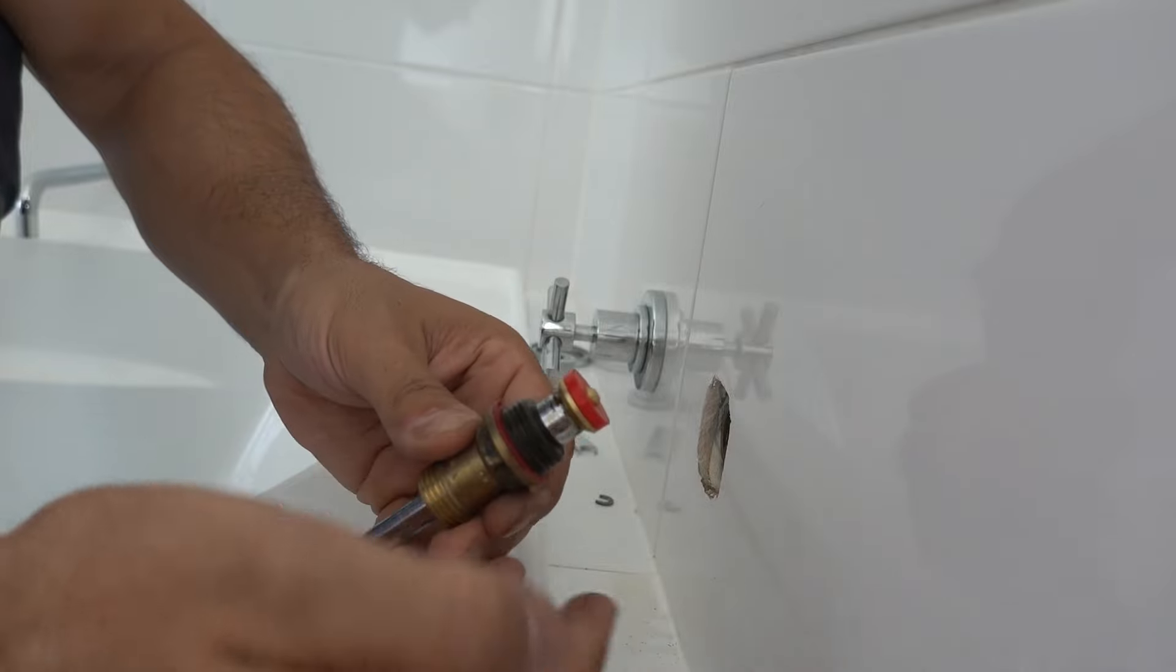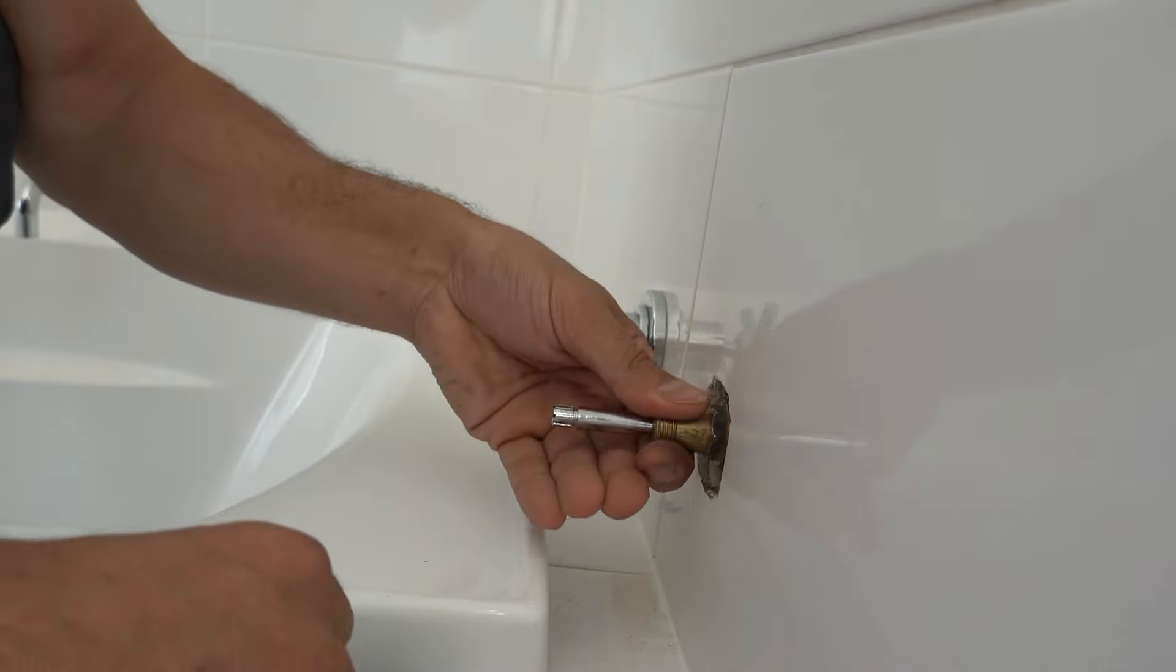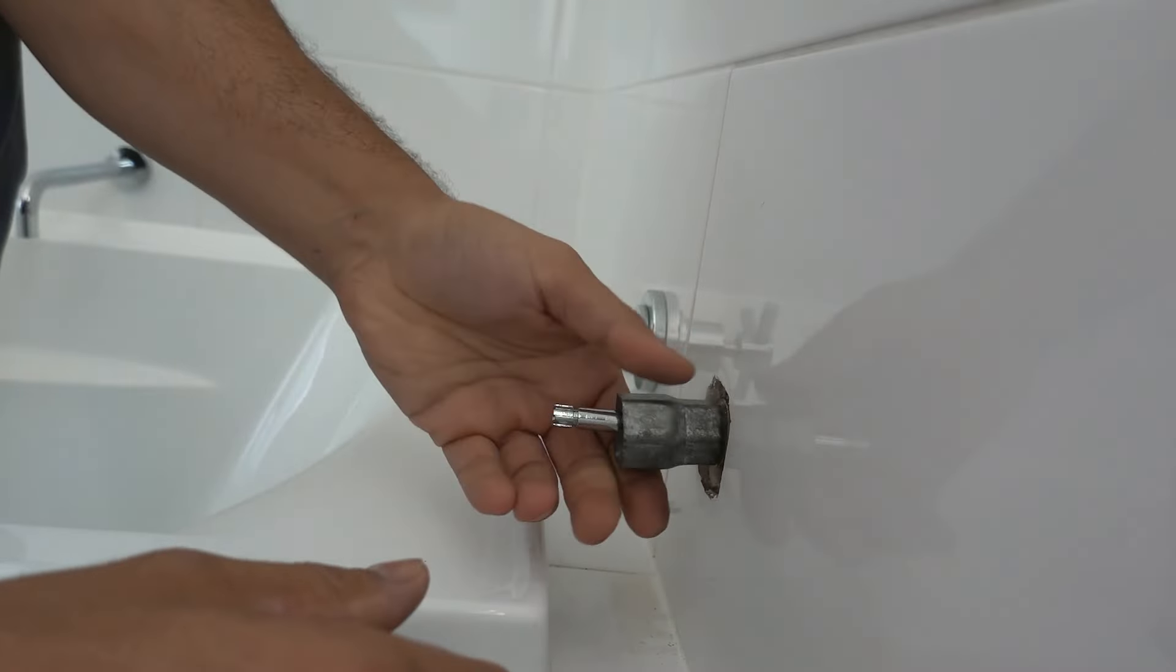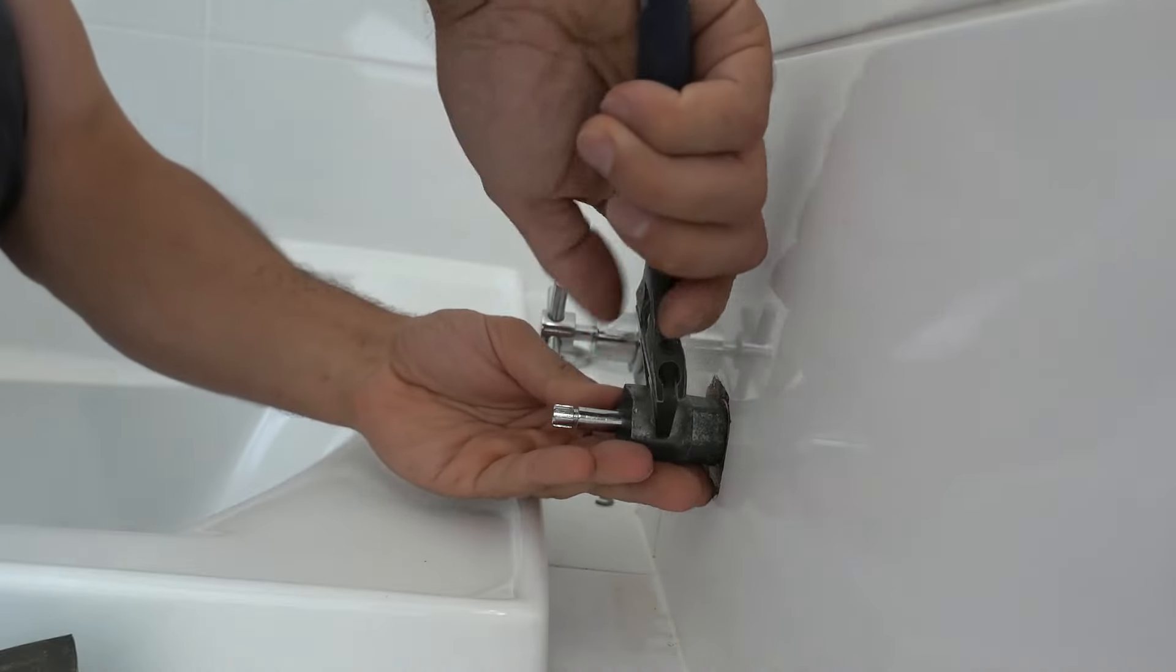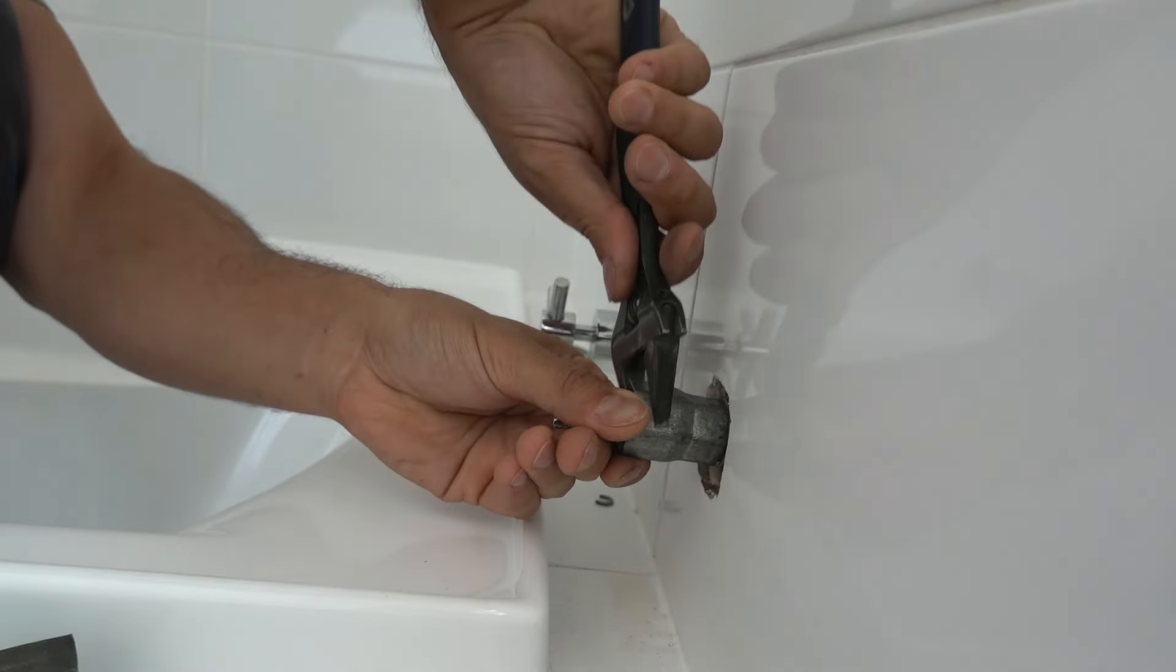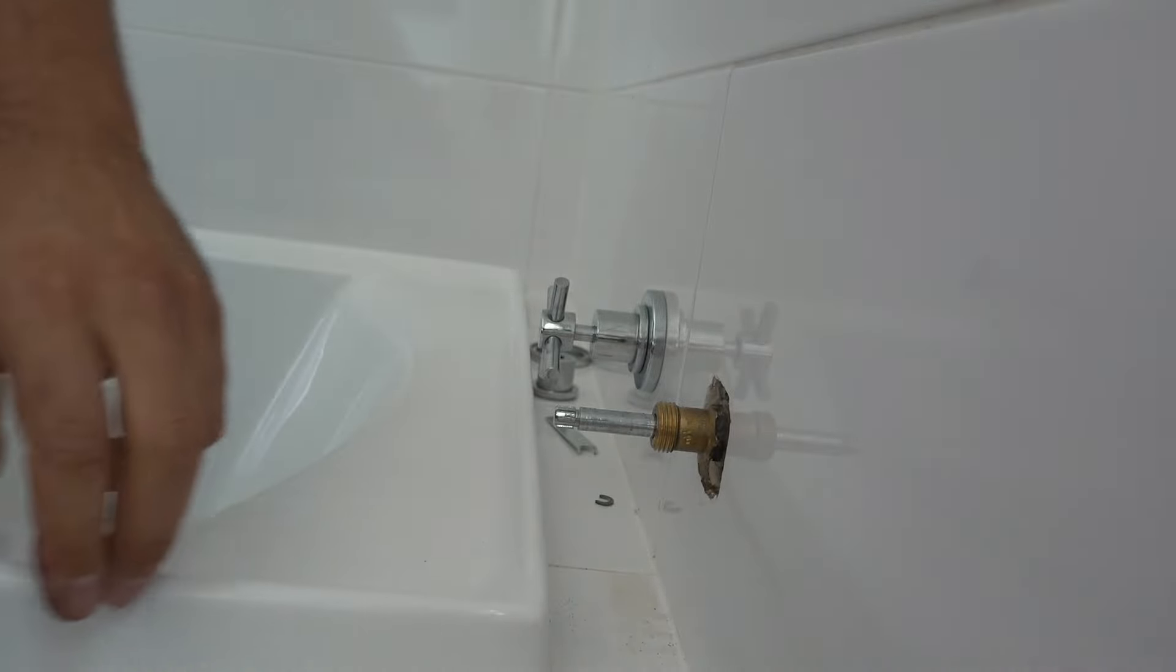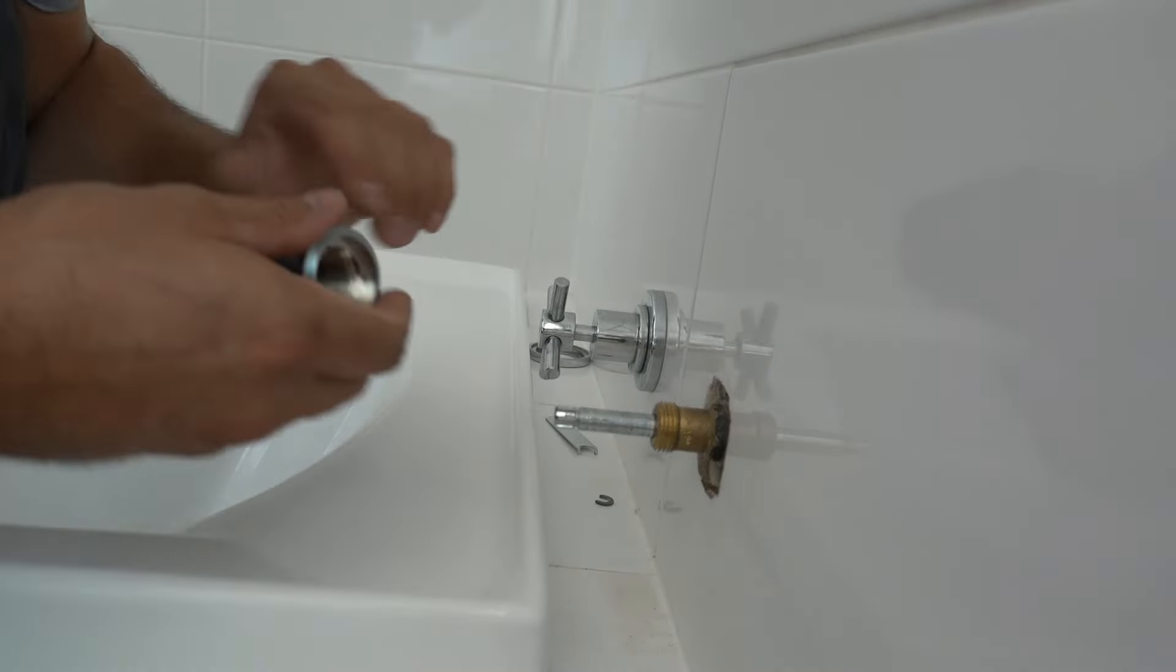So we've got our new washer, put that one on top, twist it back on. We'll lock everything back down. Once again, you can use that extension rod. That's nicely locked. Now we can return our tap handle and cover plates.